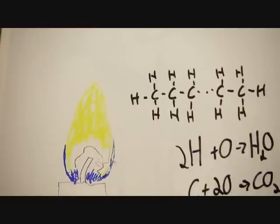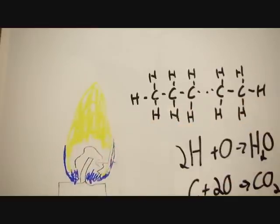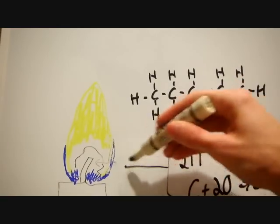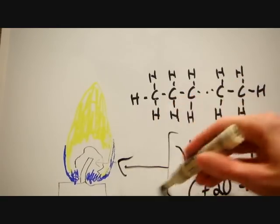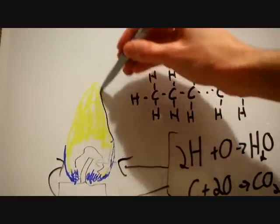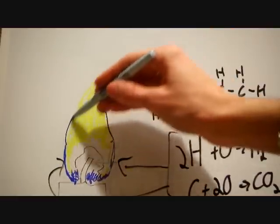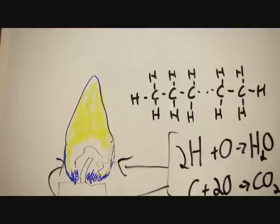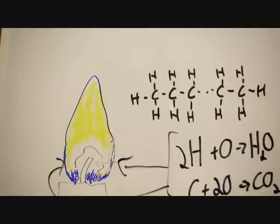The parts of the candle flame that appear to be blue actually represent the areas where the combustion reaction is taking place, and these blue areas actually surround the entire visible flame. It's just harder to see them towards the top because the yellow light of the flame is more prevalent and blocks out the fainter blue light surrounding it.